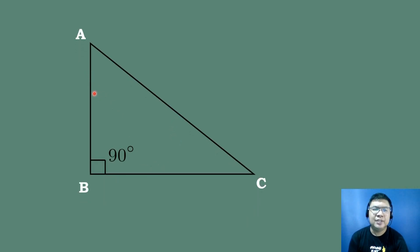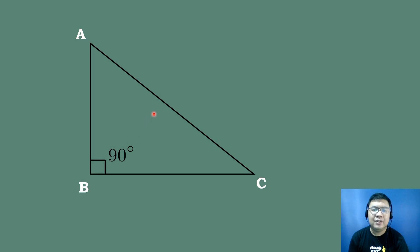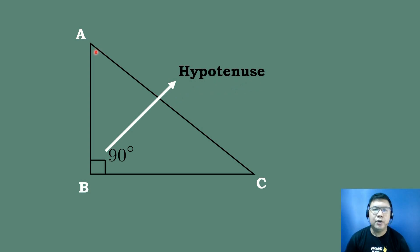Let's identify the parts of a right triangle. We have triangle ABC in which angle B has a right angle, so angle B is equal to 90 degrees. To identify the hypotenuse, which is the longest side of a right triangle, we will look at our right angle. The opposite side of the right angle is the hypotenuse. So the longest side of our right triangle is segment AC, which is our hypotenuse.